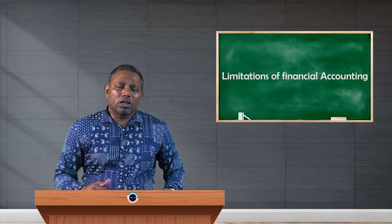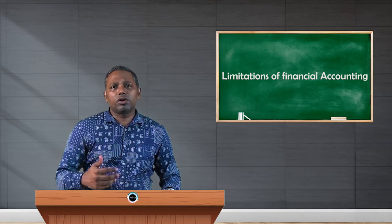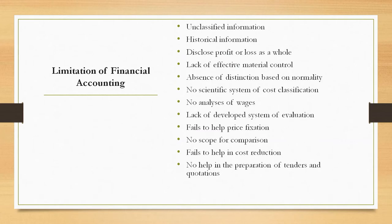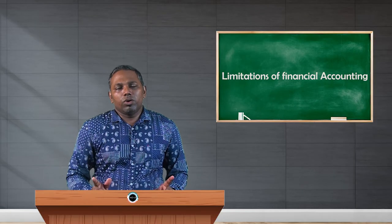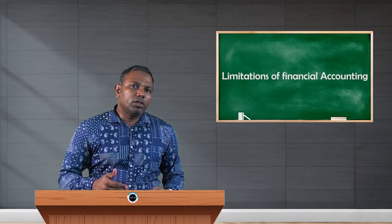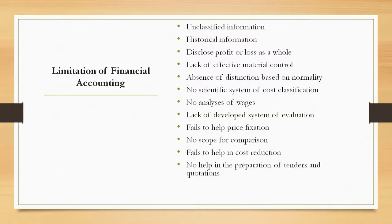Another limitation of financial accounting is the non-disclosure of profit or loss at the department or product level. Companies function department-wise, so management needs to know which department is making profit. When the company handles two or three products, management needs to know which product is making a profit. In cost accounting, we look into each and every activity to determine whether it is earning a profit or not — that data is not available in financial accounting.